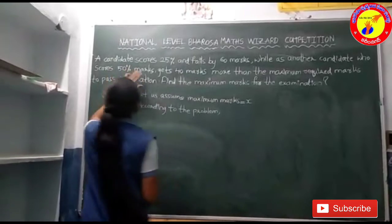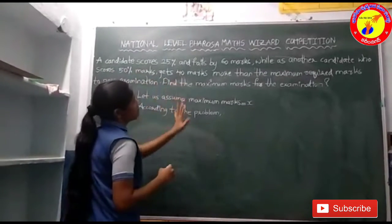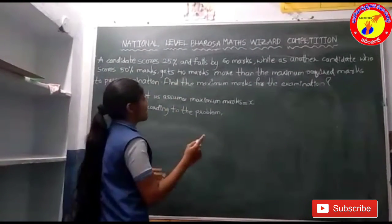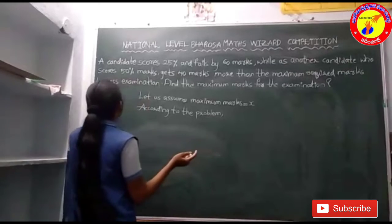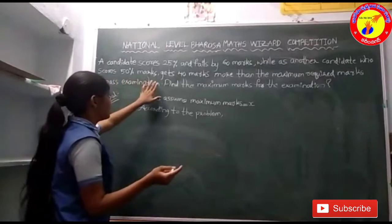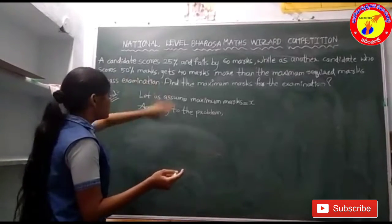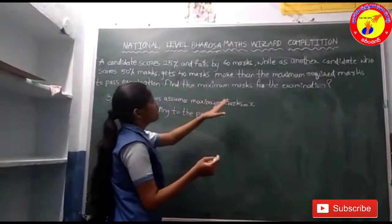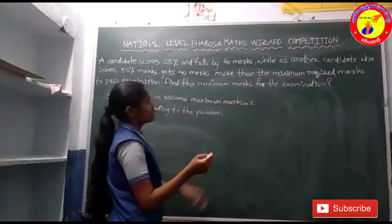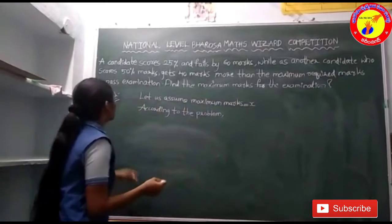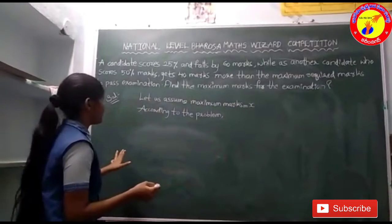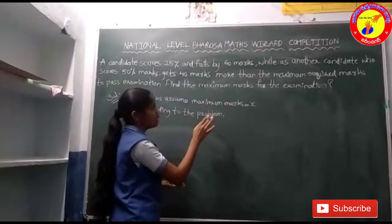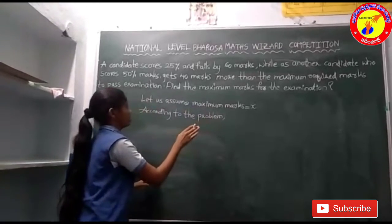A candidate scores 25% and fails by 60 marks, while another candidate who scores 50% marks gets 40 marks more than the maximum required marks to pass the examination. Find the maximum marks for the examination.